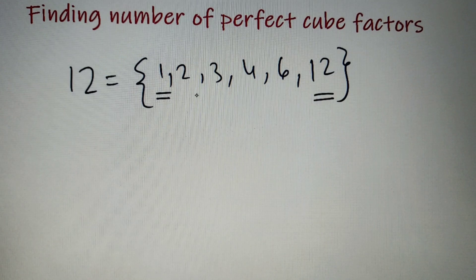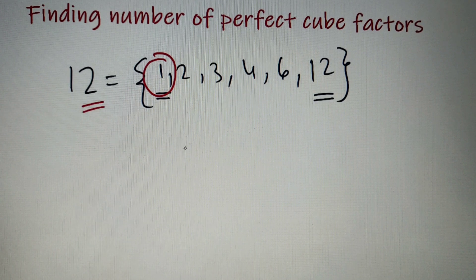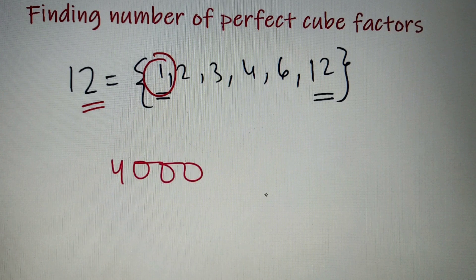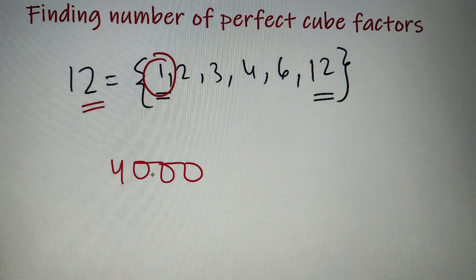Since we are more interested in calculating how many factors are perfect cubes, we can see that only factor 1 is a perfect cube among all 6 factors of 12. So 1 is the number of factors which are perfect cube for the case of 12. Now this was a simple example, but if I tell you to find the number of factors of 4000 and check how many of them are perfect cubes, that would be a very tedious step. So let's learn a simple formula by which we can easily calculate the number of perfect cube factors for any given number.